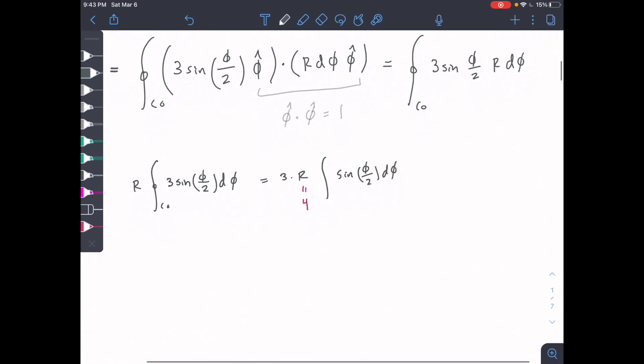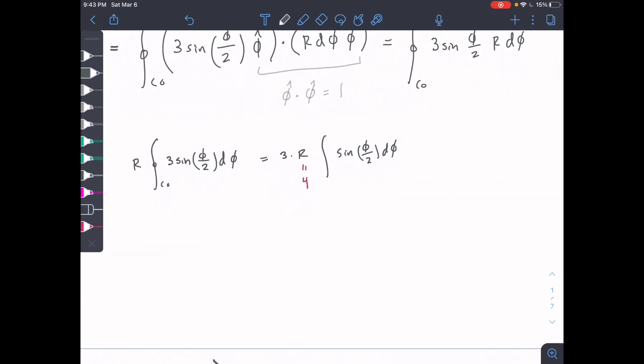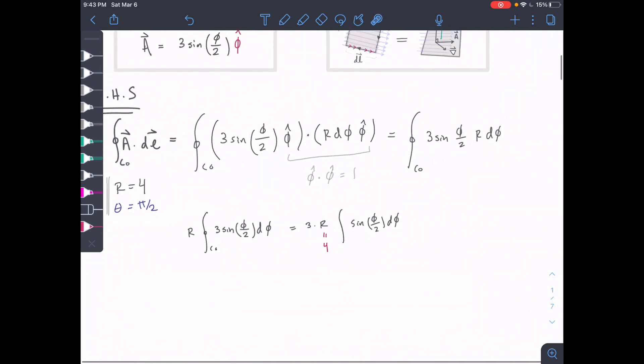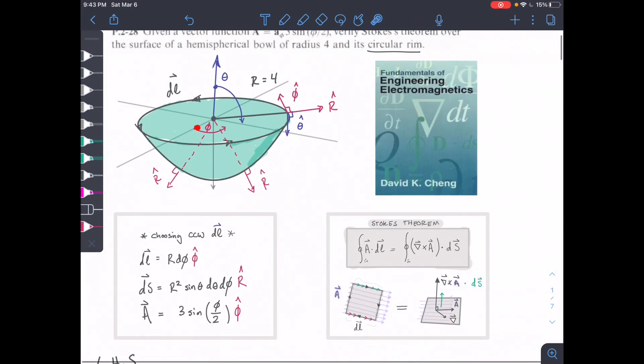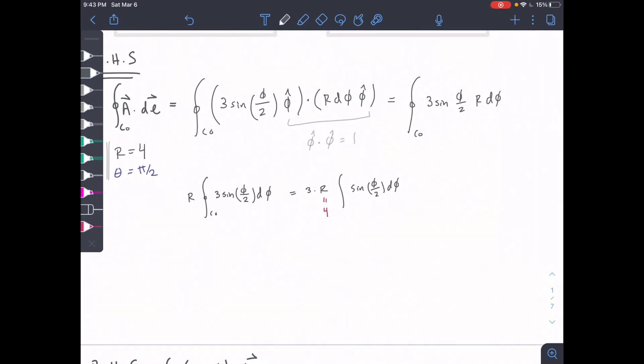This outer part we can set equal to 12 in the next step, but let's find our bounds first. Our bounds for phi - looking at the figure, we have a full half circle. Our phi by convention starts here, and we have a full revolution for our shape. That means our phi goes from 0 to 2 pi. 2 pi is the same as 360 degrees, all the way around our circle. It's just by convention 0 to 2 pi.